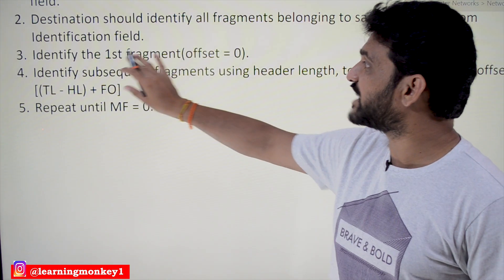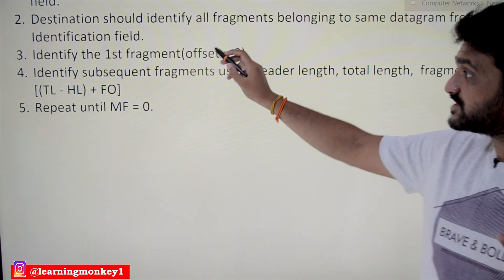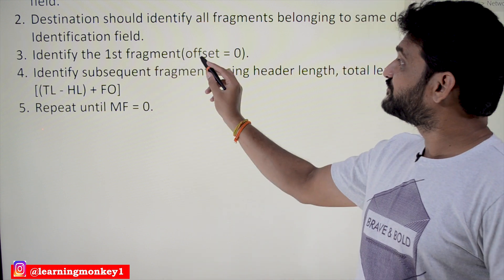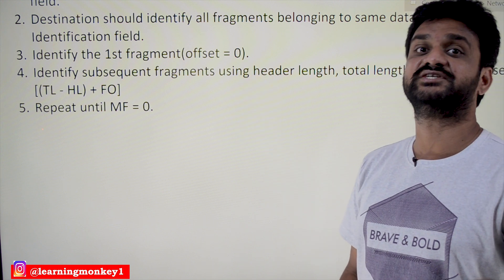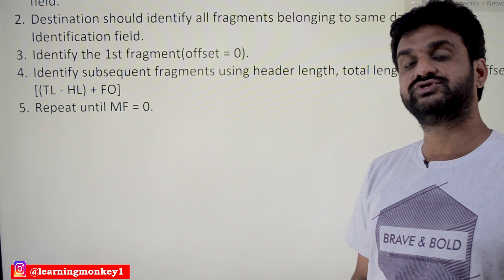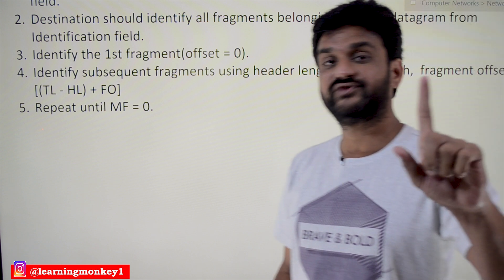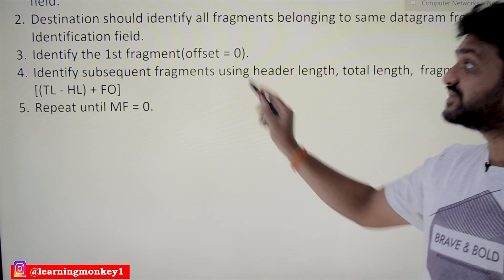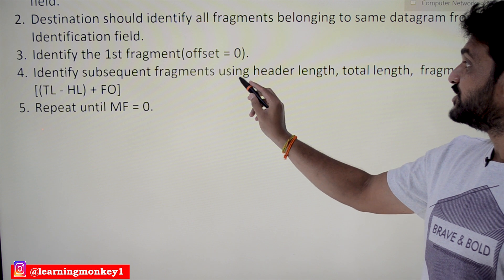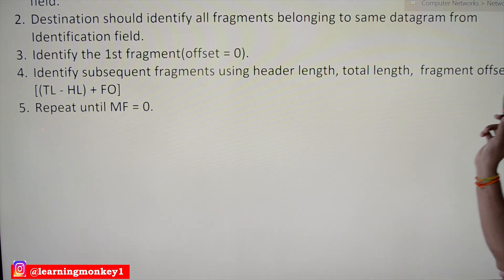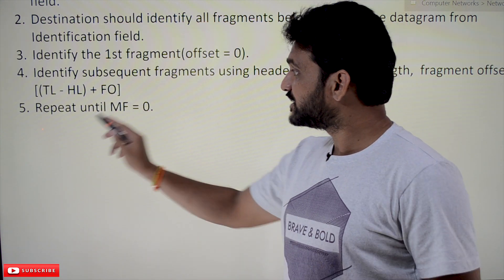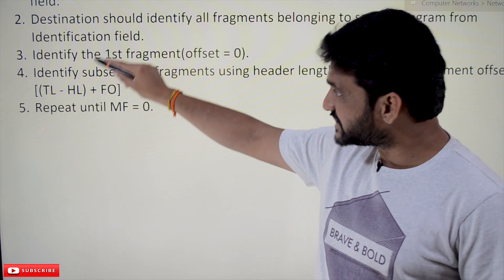The third step: identify the first fragment — this is where reassembly starts. If the offset is set to zero and MF is set to 1, it means this is the first fragment. Next, identify subsequent fragments — how that identification is done uses header length, total length, and fragment offset. The equation used is: total length minus header length plus offset. Repeat until MF is equal to 0.